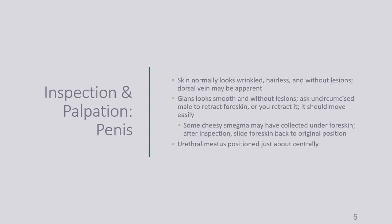During inspection and palpation of the penis, the skin normally looks wrinkled, hairless, and without lesions. The dorsal vein may be fairly prominent. The glans itself should be smooth without any lesions. If the male is uncircumcised, either ask them to retract the foreskin or you should retract it — it should move easily. You might find some discharge called smegma underneath the foreskin, and that's normal. Talk to them about cleanliness and self-care. After inspection, make sure you slide the foreskin back to the original position to prevent paraphimosis.